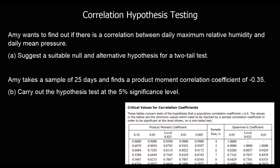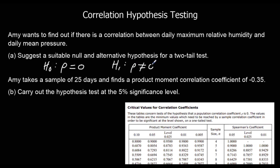Amy wants to find out if there's a correlation between humidity and pressure. We need to suggest a null and alternative hypothesis for a two-tail test this time. Our null hypothesis is going to be the same — that the correlation is zero. But for a two-tail test, the alternative hypothesis isn't going to say bigger than or less than zero; it simply says the correlation is not zero.